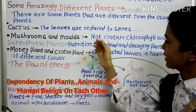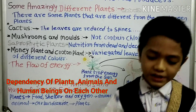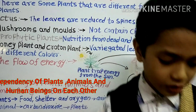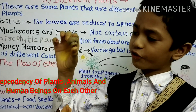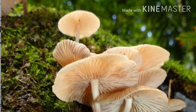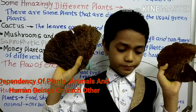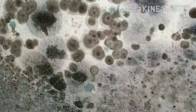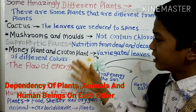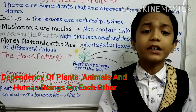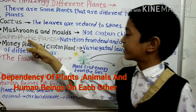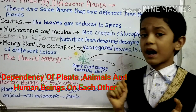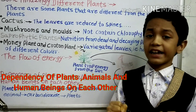Mushrooms and moulds do not contain chlorophyll and are non-green. They don't have chlorophyll, so how do they make their own food? These are some types of mushrooms and fungus. They absorb nutrition from dead and decayed plants and animals. Hence they are called saprophytic plants — plants which take and absorb nutrients from dead and decayed matter.